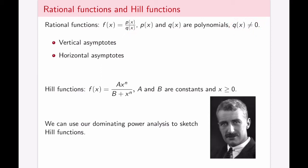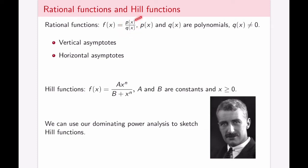Rational functions come with asymptotes: vertical asymptotes, horizontal asymptotes, and slant asymptotes, which we will not really talk about. Vertical asymptotes are fairly easily calculated. If we have a rational function in simplest terms — meaning the denominator and numerator do not share factors — vertical asymptotes are produced when the denominator is equal to zero.